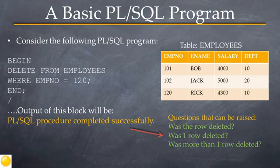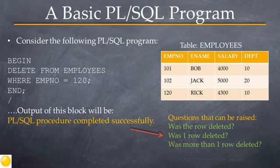At this point you might ask: what happened when the block was executed? Was the row to be deleted found in the table? Was one row deleted, or was more than one row found and deleted? In order to write complete PL/SQL blocks with DML statements, we need to make use of the attributes of the SQL cursor.